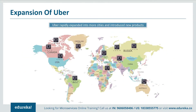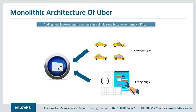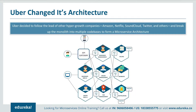As Uber started expanding worldwide into many more cities, it continuously faced problems of scalability and continuous integration. Developers could not continuously build, test, deploy and release software frequently as Uber expanded city-wise. Also, adding new features and fixing bugs in a single repository became extremely difficult. To avoid such challenges, Uber decided to follow the lead of hyper-growth companies like Amazon, Netflix, SoundCloud, and Twitter, and broke down its monolithic framework into multiple codebases to form a microservice architecture.